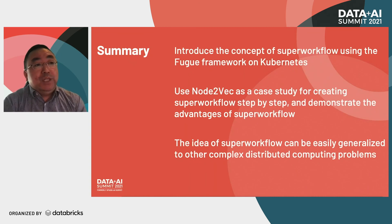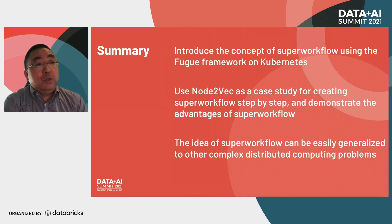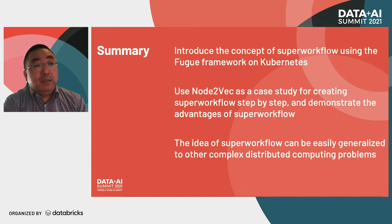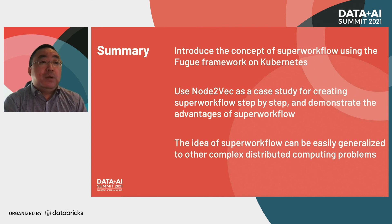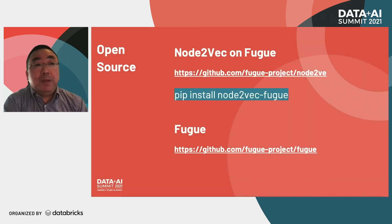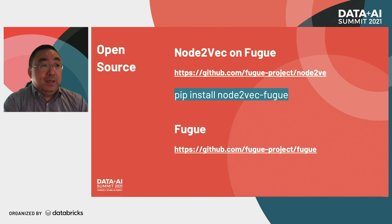In summary, we introduced the concept of super workflow using the FOOG framework on Kubernetes. FOOG and Kubernetes are the two critical dependencies for developing such efficient super workflows on complex graph neural networks. We use node2vec as a case study to show how to create a super workflow step by step and demonstrate its advantages in runtime and cost reduction. Finally, it is straightforward that the idea of super workflow can be generalized to other complex deep learning problems. The FOOG-based node2vec has been open-sourced on GitHub under the FOOG project and can be pip installed. The package also contains a few end-to-end examples for you to quickly get started. That's all for my talk. Thank you.